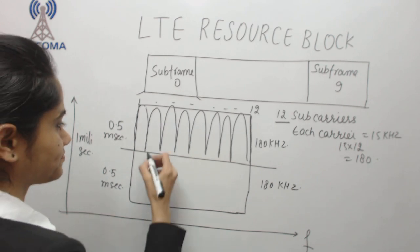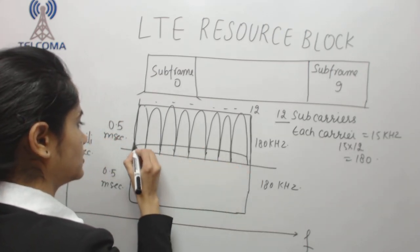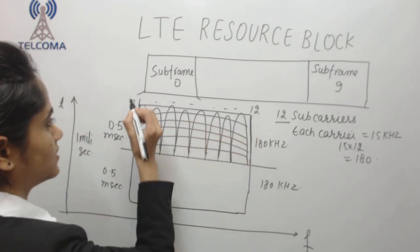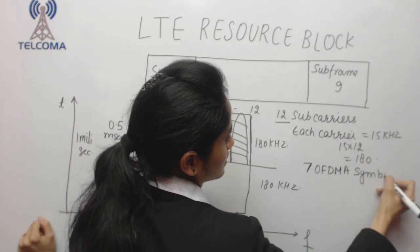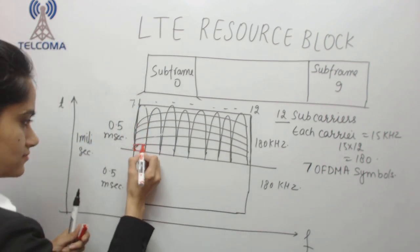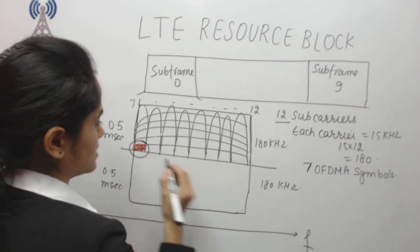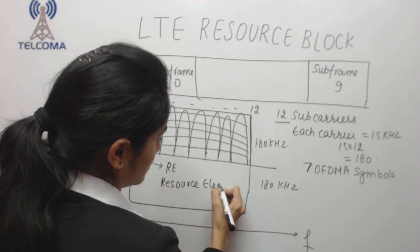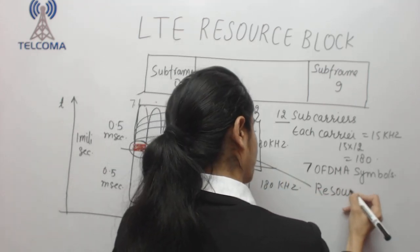The sub-carriers, as we know, use OFDMA for the frequency domain. These sub-carriers are further divided into OFDM symbols — specifically 7 OFDM symbols. So we have a small unit of frequency and time formed by this division. This smallest unit of frequency and time is called an RE — a Resource Element. The complete block which carries our data is called the Resource Block.